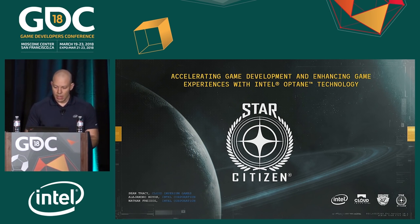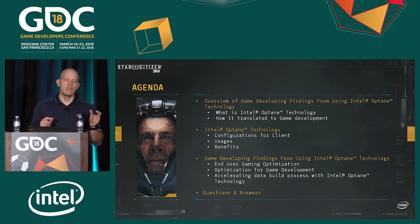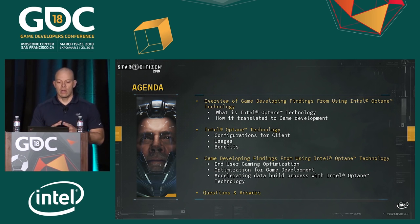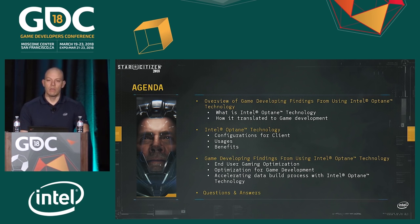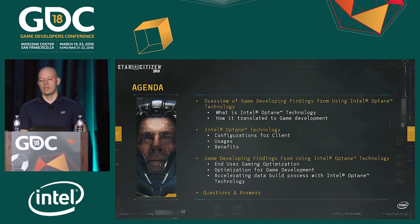Let's get started on today's agenda. First, we'll give a quick background and overview of findings from Cloud Imperium. We'll also give a quick introduction to Intel Optane technology. Second, we'll talk about Intel Optane technology, its benefits, what it actually is, and how it has helped other companies. After that, we'll go into the meat of the presentation: how this technology helped improve game development. Lastly, we'll have it open for questions and answers.